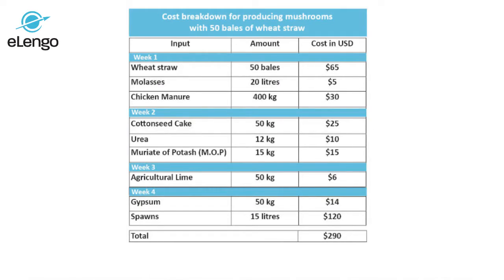The next expenses we are going to look at are the recurring expenses, especially for the compost and establishing a mushroom growing farm. The first cost you will incur is for the composting process and establishment of the mushroom greenhouse. The first expense is the bales — fifty bales of wheat straw require sixty-five US dollars. For first-time farmers, we recommend beginning with around fifty bales of wheat straw, which dictates the magnitude of the crop that you will have. From that, we can trickle down the ratios of components required and at what cost to establish the compost and the farm.